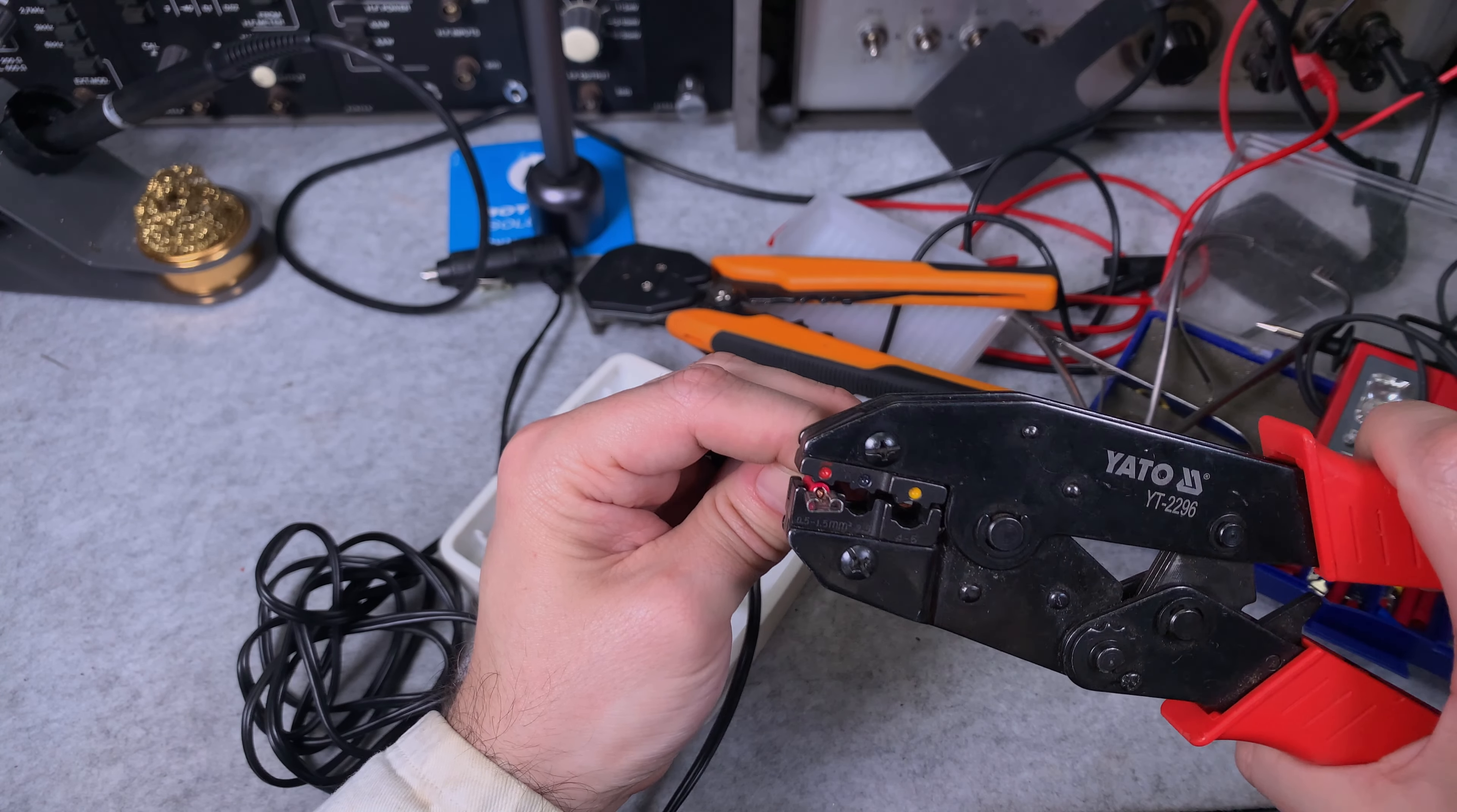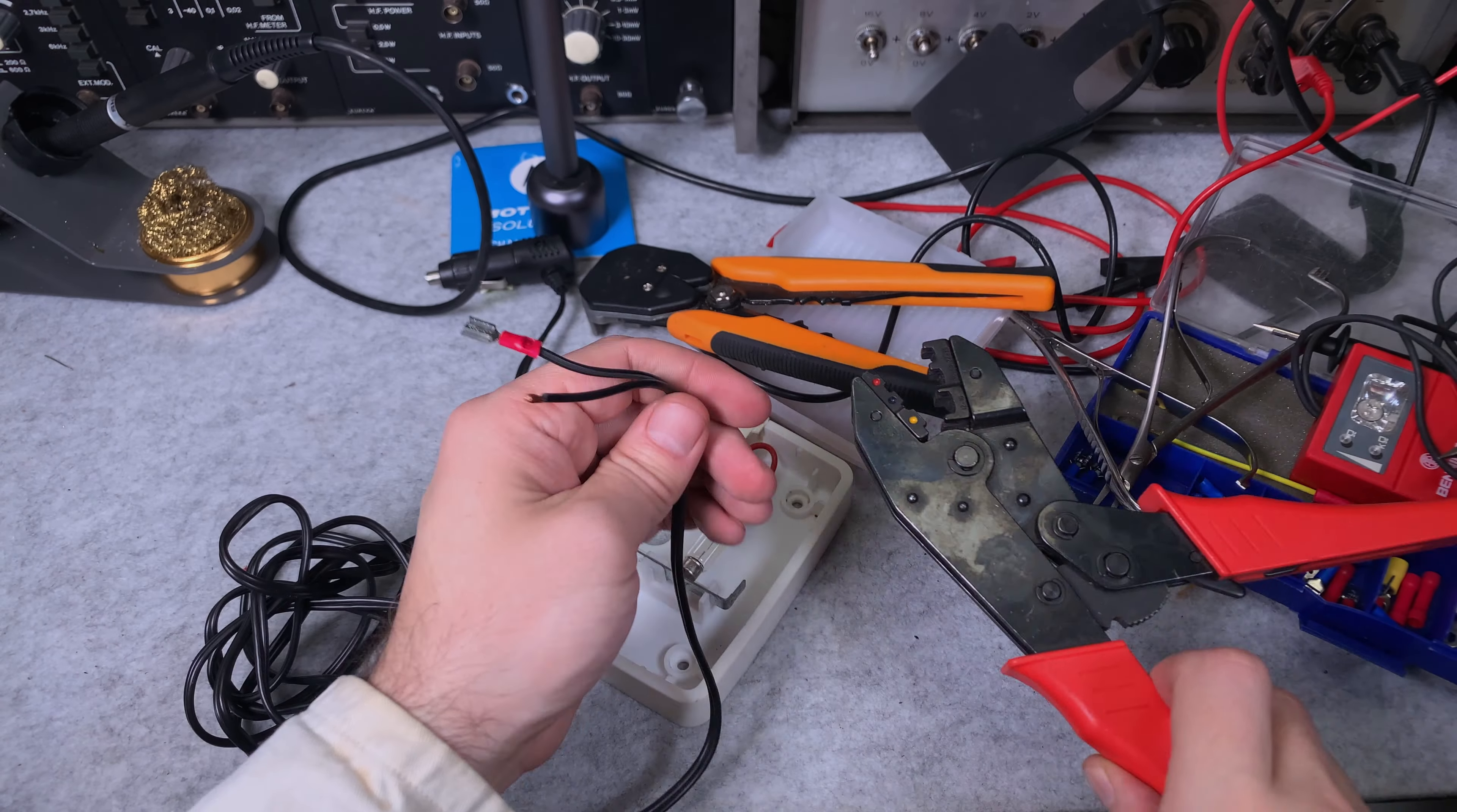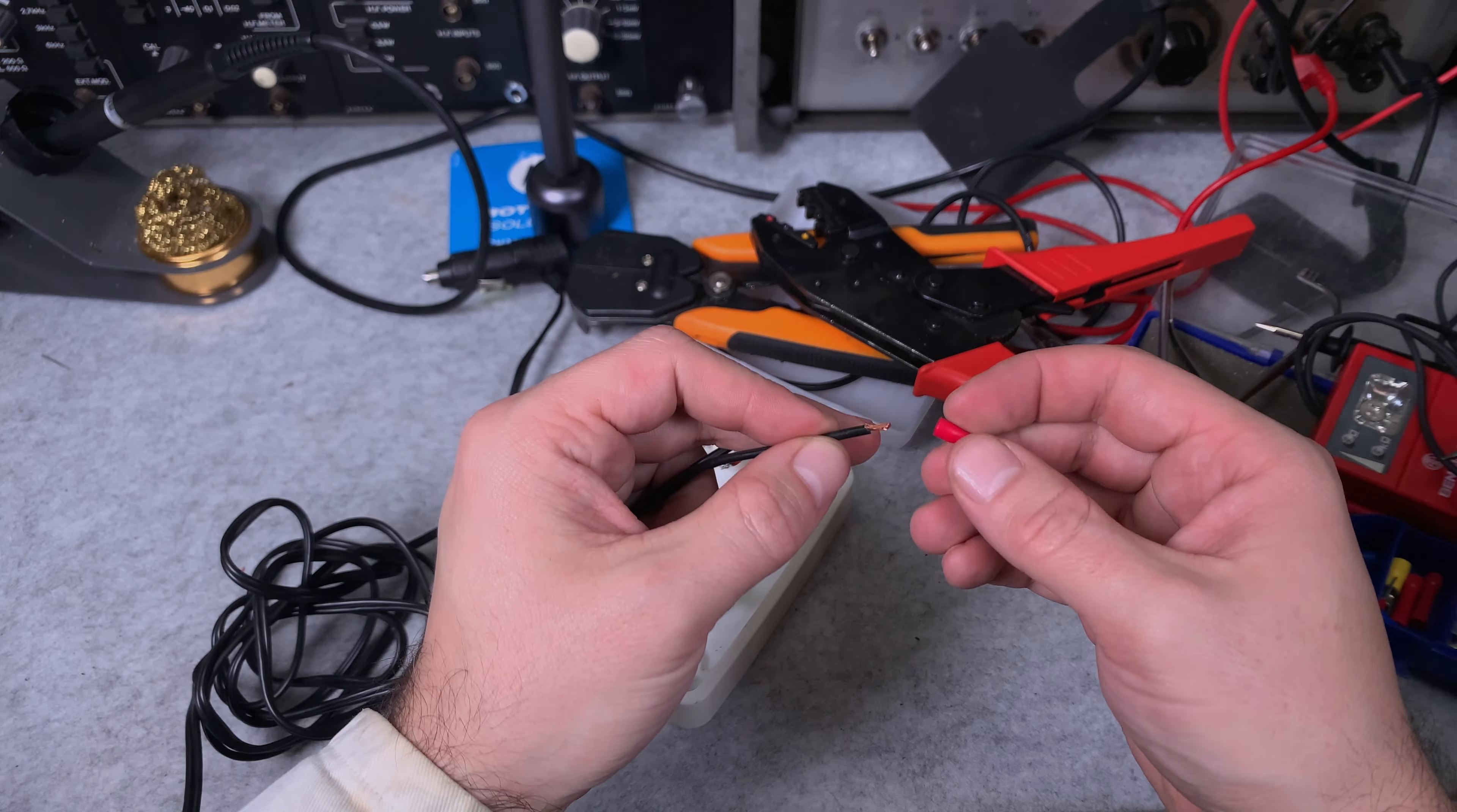This is going to be our front. We put it like this, we correct it, and we nicely crimp it. This is what we've got. We do a pull test, and everything is fine. Let's do that again.